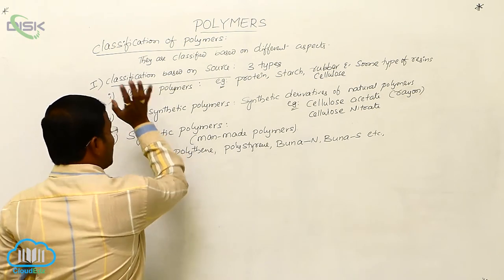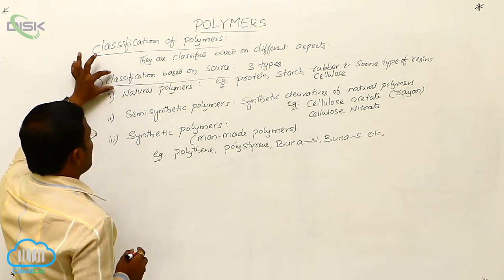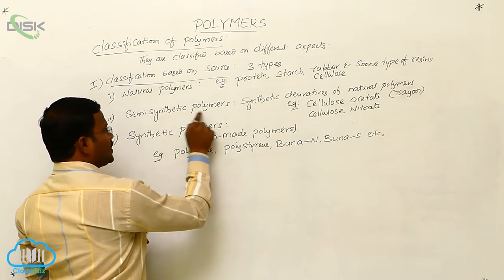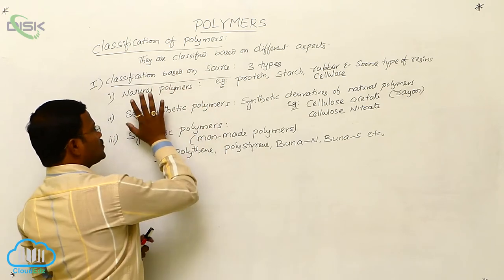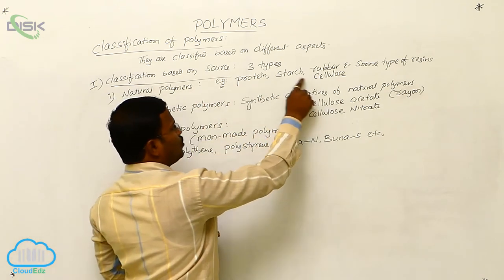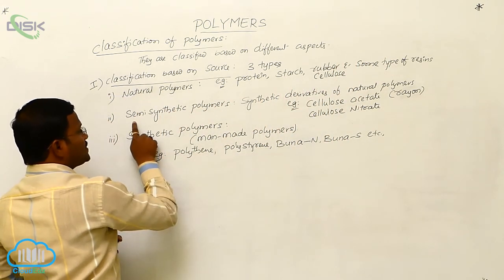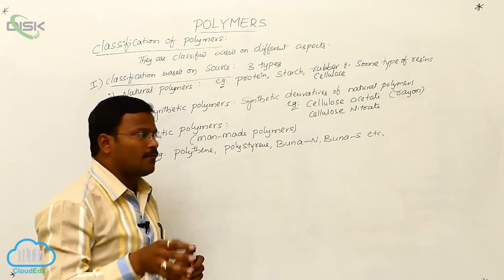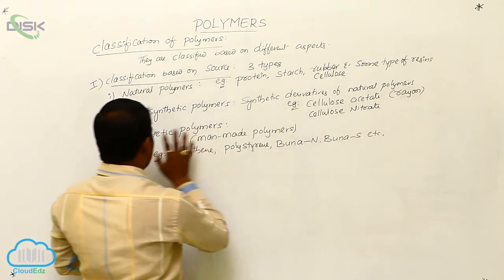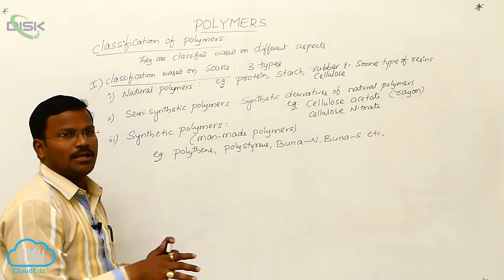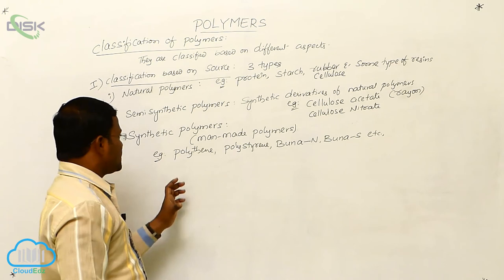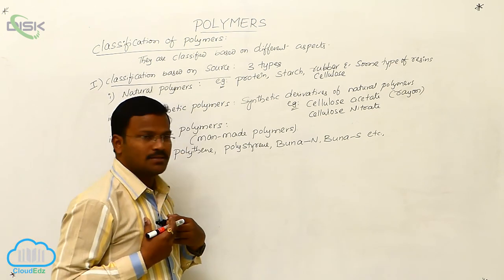So this is about the first type of classification — classification of polymers based on their source or availability. There are three categories: natural polymers, semi-synthetic polymers, and synthetic polymers. Natural polymers include proteins, cellulose, starch, rubber, and some resins. Semi-synthetic polymers are synthetic derivatives of natural polymers, such as cellulose acetate (rayon) and cellulose nitrate. Synthetic polymers are purely man-made, derived in the laboratory — examples include polythene, polystyrene, Buna-N, and Buna-S. These synthetic polymers are widely used by us in regular life.